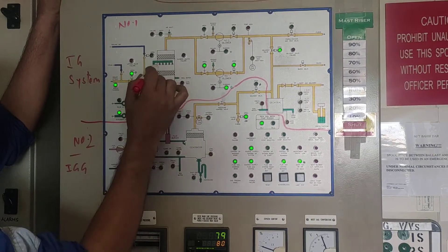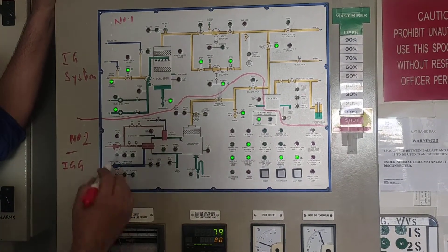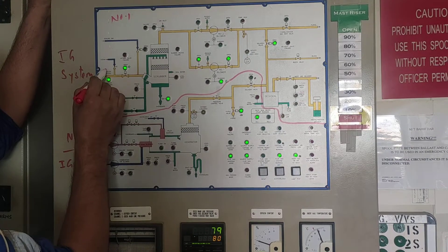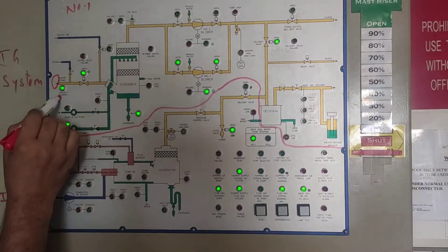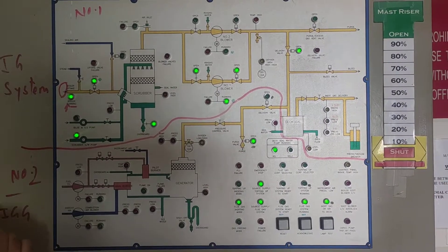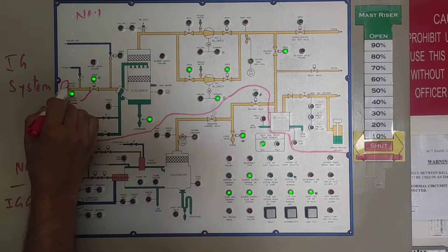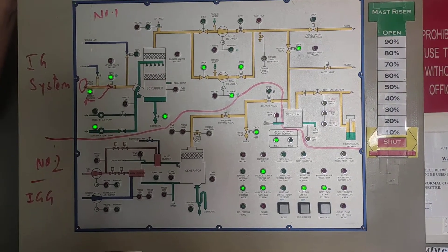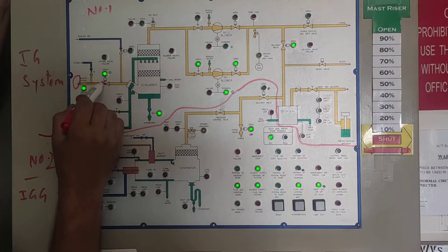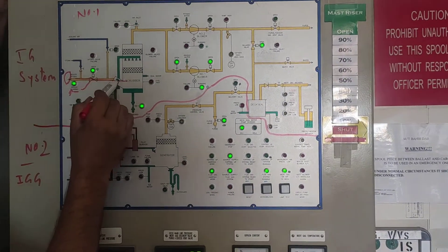First we will understand the inert gas system. This is the boiler, here is the boiler and this is the boiler uptake valve. Now, if you see right now the boiler is running. The boiler uptake valve is open. From here the IG is coming right now. This is basically the flue gases are coming here right now. This valve is open, it is receiving grain and it is going to the scrubber.